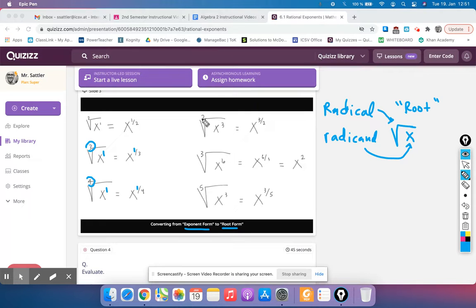So then that means square root of x cubed is x to the 3 over 2, or x to the 1.5, same thing. And the cube root of x to the 6th would mean we put this number in the denominator, this number in the numerator, always. So that's x to the 6 over 3, which reduces to x squared. And then this one would be x to the 3 5ths. So that's how you convert.